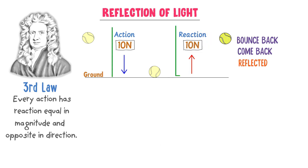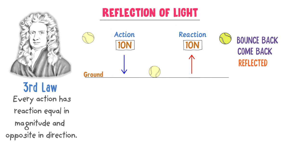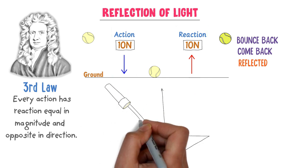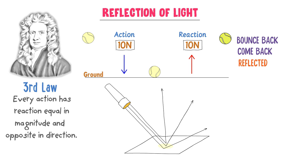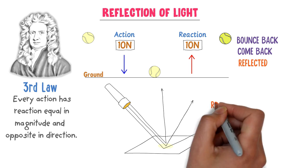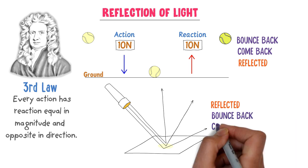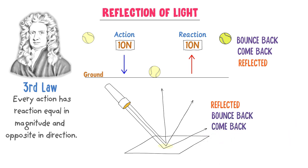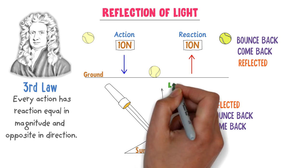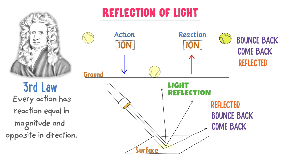It is due to the action and reaction force that the ball is reflected or bounced back when it hits the ground. Now consider a light ray hitting a surface. This ray of light is also reflected, bounced back, or comes back just like the ball. This coming back or bouncing back of the light ray after hitting any surface is called reflection of light.